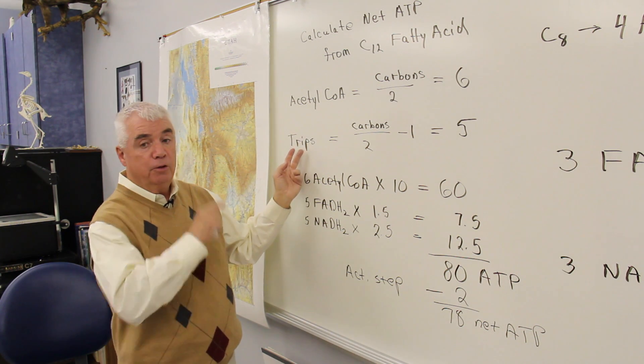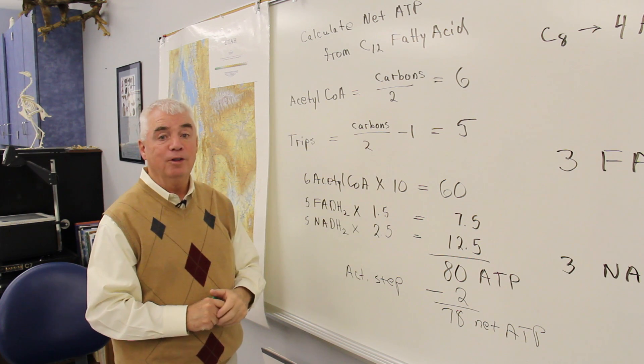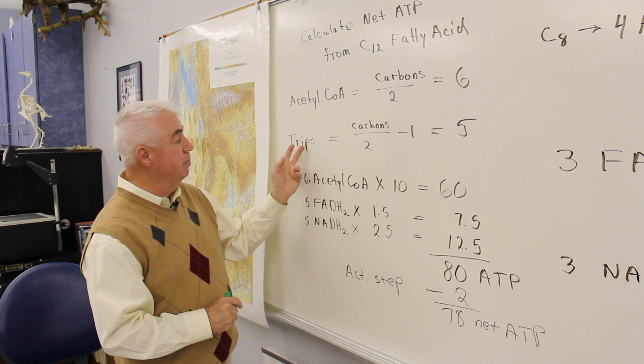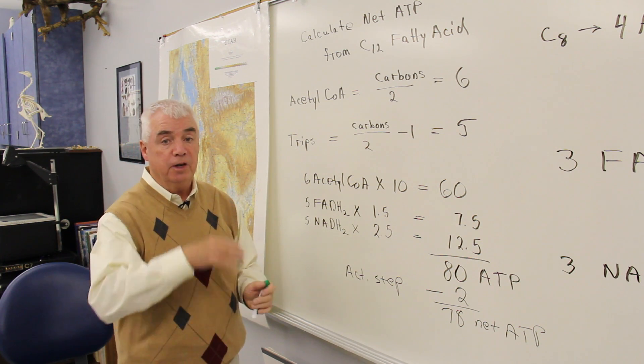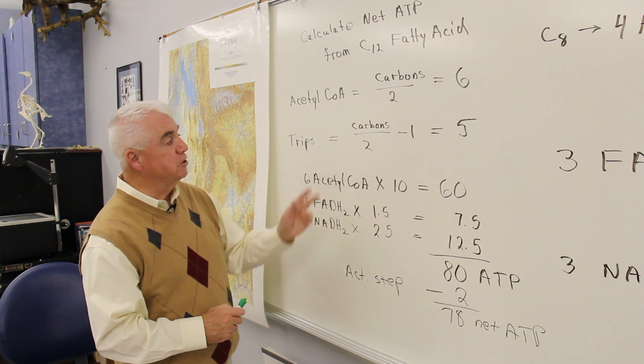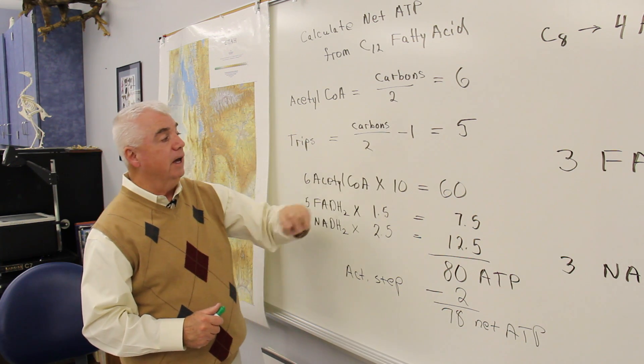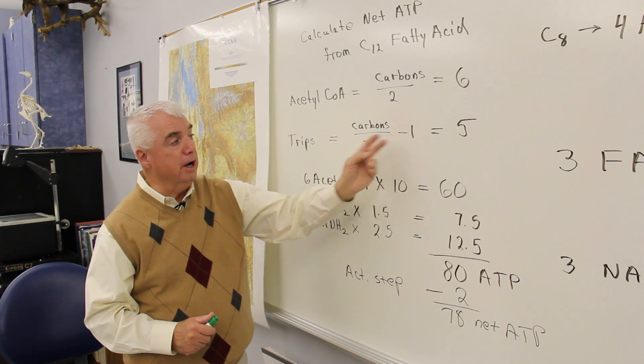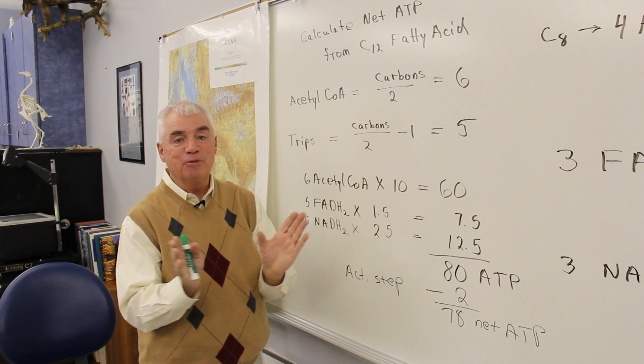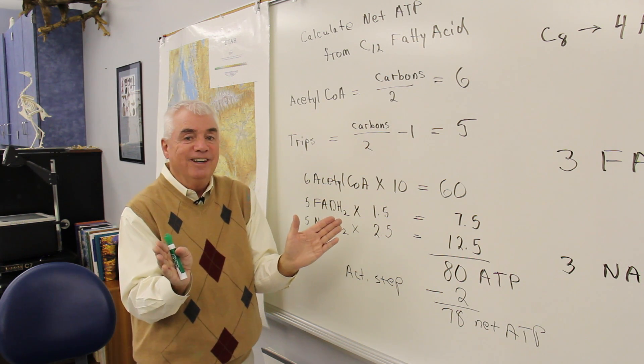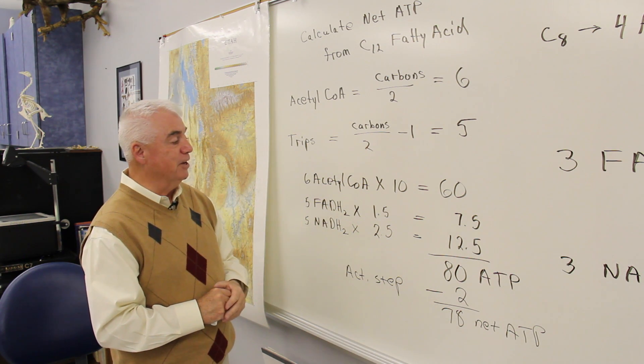And the trips through the fatty acid spiral or the beta-oxidation pathway, the number of passes that we'd have to go through this series of four reactions, is one less than this number, carbons over 2 minus 1. Because remember in the last pass, we get two units of acetyl-CoA.